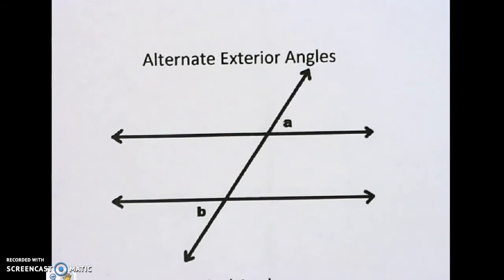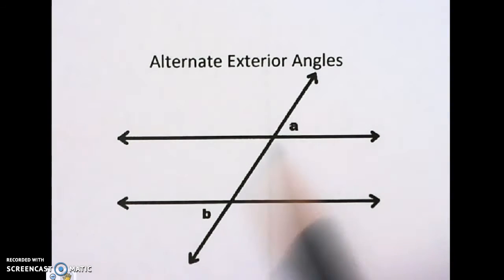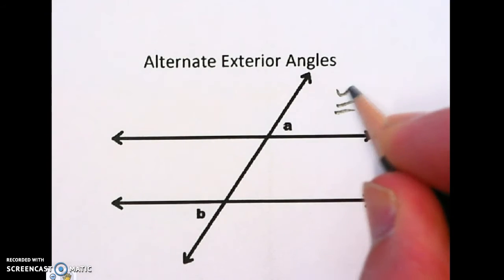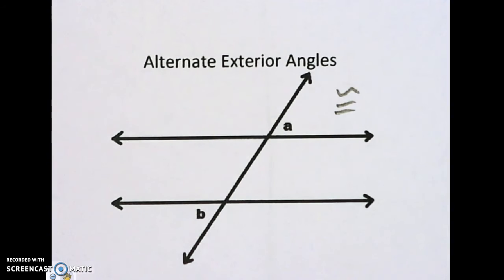The next type of angle is alternate exterior. They're outside of the parallel lines, and they're opposite of each other. They're congruent, too. They're the same size. Equal sign with a squiggly to show congruent.